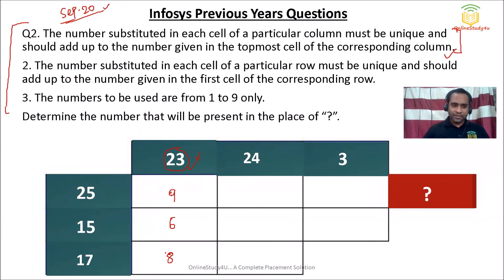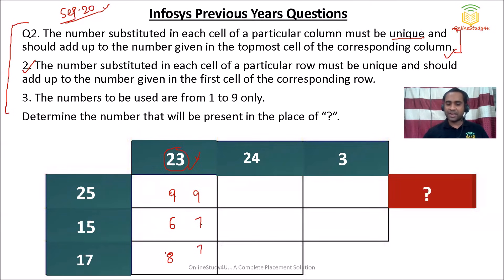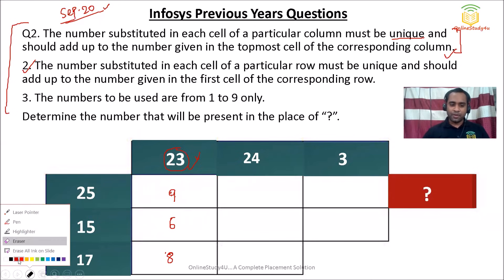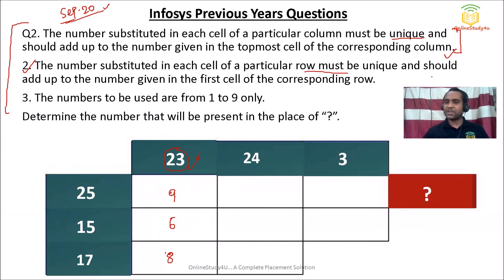The second rule: the number substituted in each cell of a particular row must also be unique — meaning numbers should not be repeated. For example, 9, 6, and 8 are all unique. You cannot write 9, 7, 7 because that repeats 7. The third rule: the numbers in each row must also be unique and add up to the number given in the first cell of the corresponding row. So if the row total is 17 and 8 is already placed, then 8 plus 9 equals 17. Numbers to be used are from 1 to 9 — single digits only.